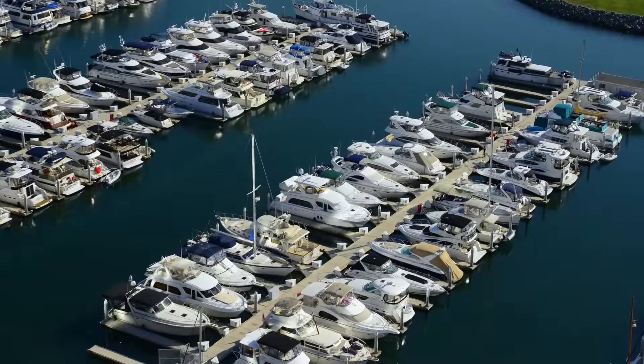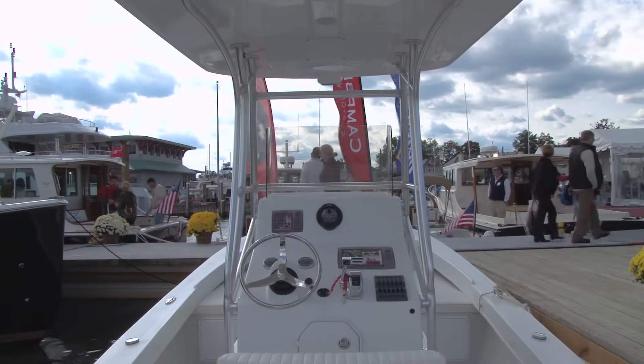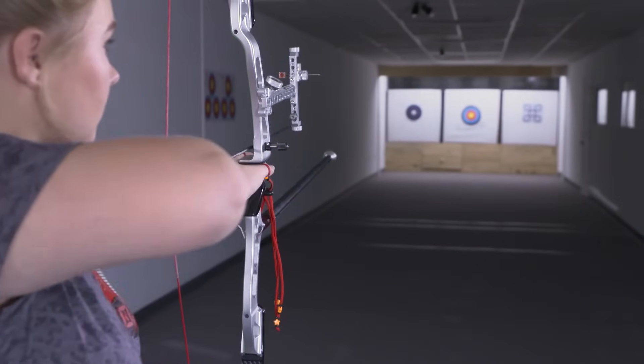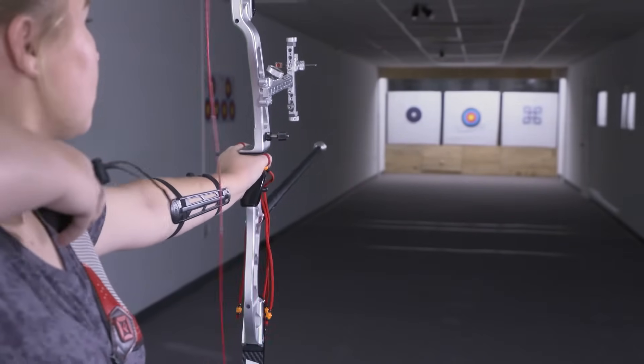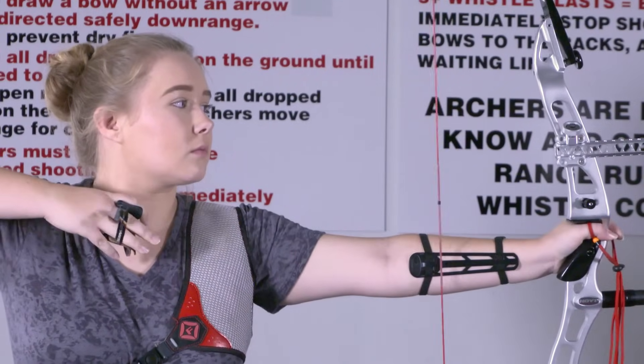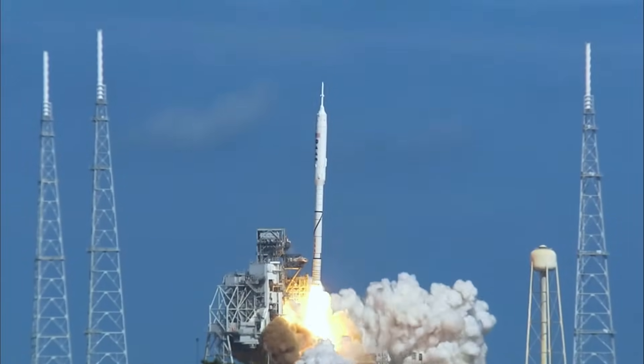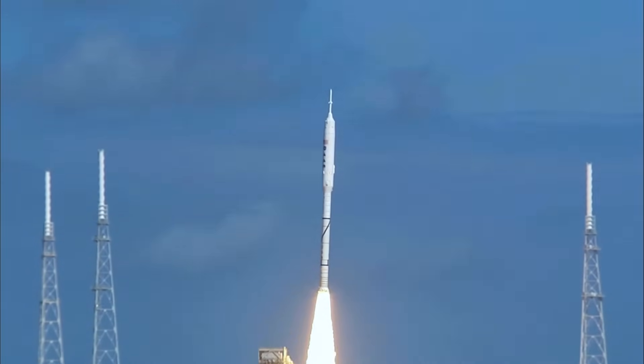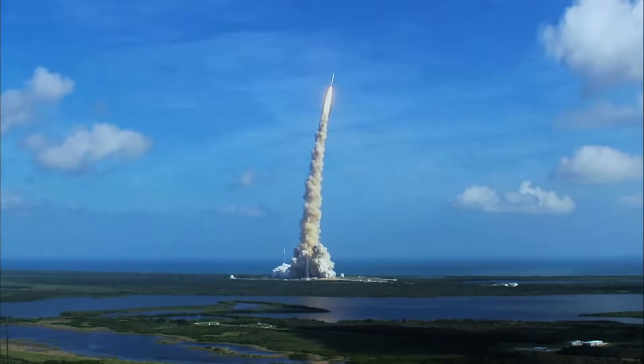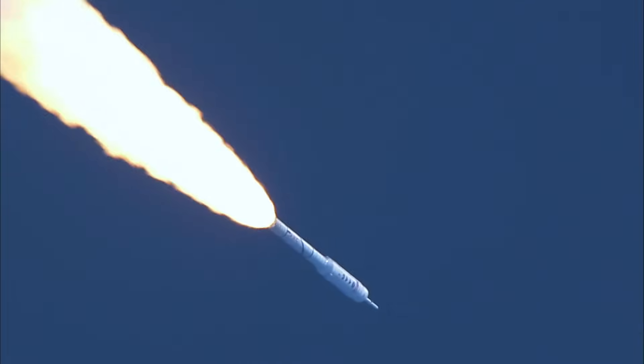We see the conservation of momentum at work all around us. When you step onto a dock from a boat, you push forward and the boat moves backward. When you shoot an arrow at a target, the recoil of the bow has the opposite and equal momentum of the arrow. And when you launch a rocket, the exhaust pushes it forward in equal and opposite measure, sending it out of the Earth's atmosphere with power and precision.